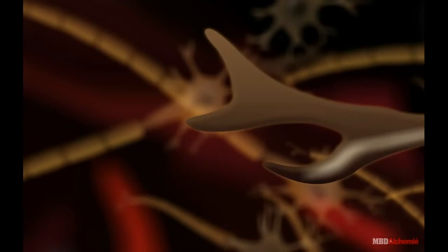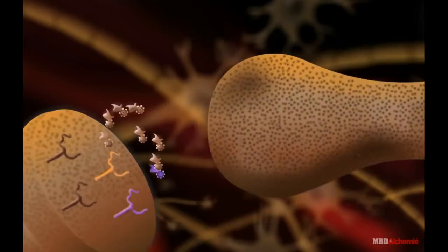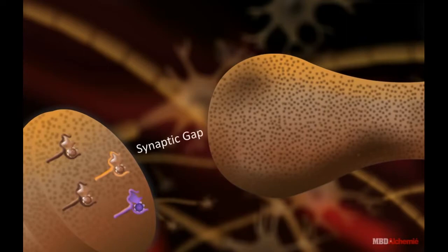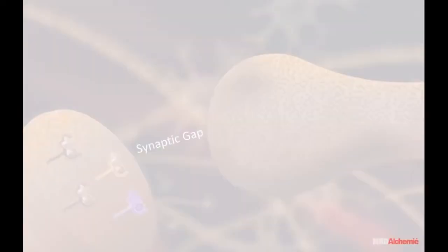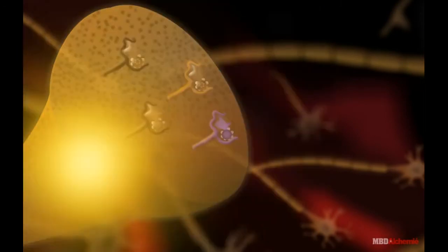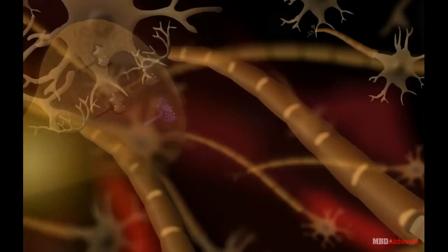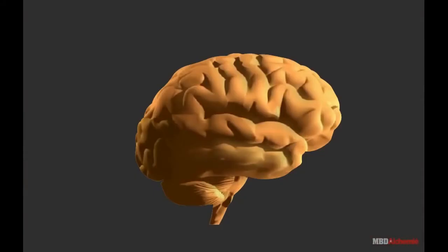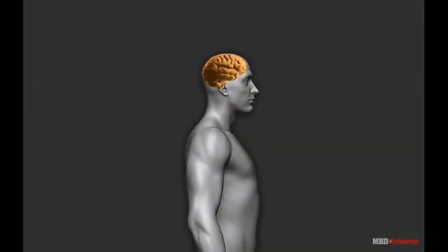At the end of the axon, the electrical impulse sets off the release of some chemicals. These chemicals cross the gap or synapse and start a similar electrical impulse in a dendrite of the next neuron. This is a general scheme of how nervous impulses travel in the body.